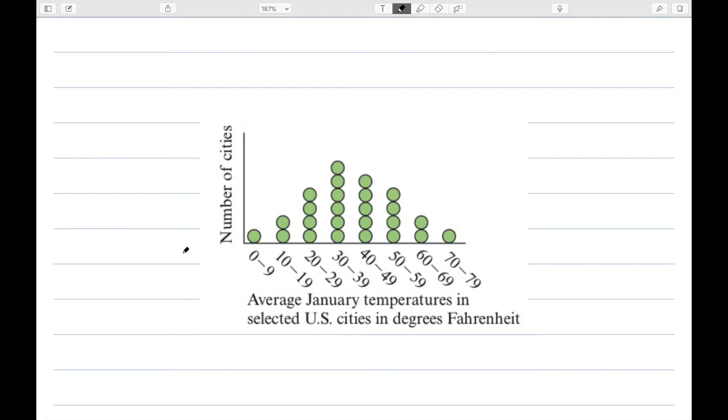If the range of data is too large, we can even group the data into intervals for the dot plot. So here we looked at the number of cities between 0 and 9, the number between 10 and 19, etc. We didn't want to have an entire number line that went all the way from 0 to 79, so we went ahead and just grouped them.